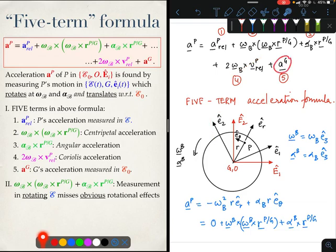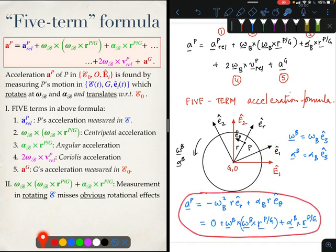a_G also vanishes because the origins of the red frame and the black frame, the observer frame and the BFCS, are the same. So what I get then is that this equation must be true.